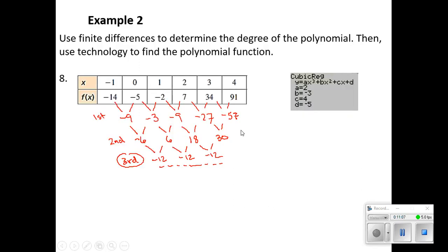So to answer this question, the function we're looking for is 2x³ - 3x² + 4x - 5. And again, the 2, -3, 4, and -5 coming right from the output on our calculator. Very cool stuff.